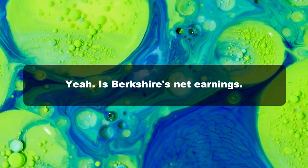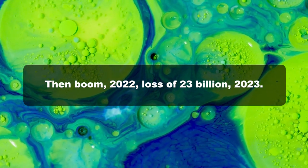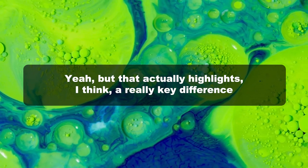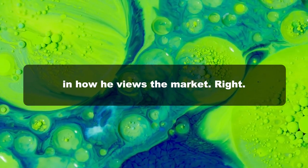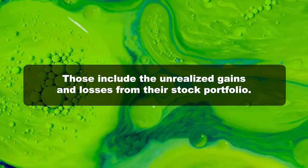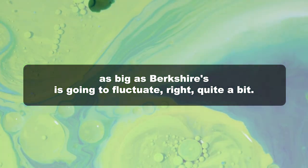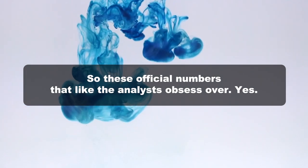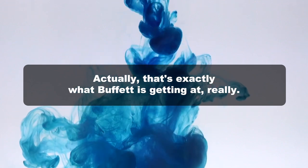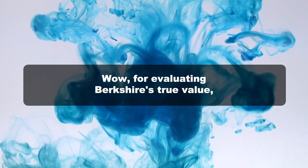Their net earnings fluctuate so much year to year. In 2021 they're up to 90 billion, then boom—2022 shows a loss of 23 billion, then 2023 back up to 96 billion. It's enough to give you whiplash. But that actually highlights a really key difference in how he views the market. These net earnings figures that dominate the headlines include the unrealized gains and losses from their stock portfolio. As you can imagine, a stock portfolio as big as Berkshire's is going to fluctuate quite a bit. So these official numbers that analysts obsess over don't really reflect how well the businesses are actually performing. Buffett is saying these fluctuations are meaningless for evaluating Berkshire's true value.